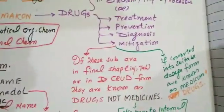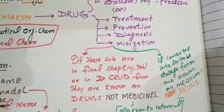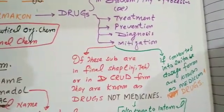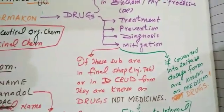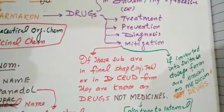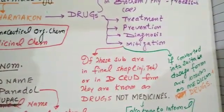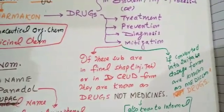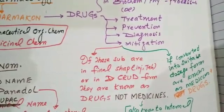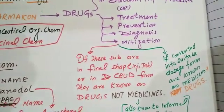We can also define a drug as a substance which is used for the treatment, prevention, diagnosis, and mitigation of diseases. For example, we use antibiotics for the treatment of infection — those are drugs. We use vaccines for the prevention of diseases. We use many chemicals in the laboratory for the diagnosis of diseases. And we use substances for mitigating symptoms — mitigating means to diminish or decrease. So drugs are any substance used for treatment, prevention, diagnosis, and mitigation of diseases.